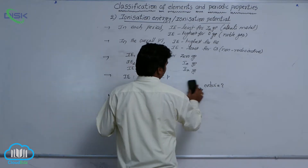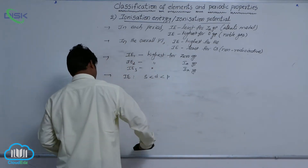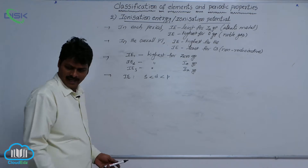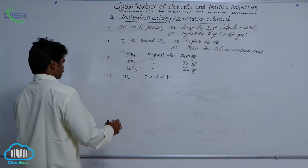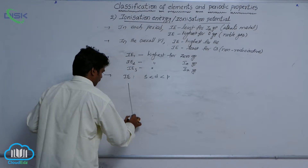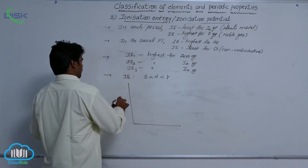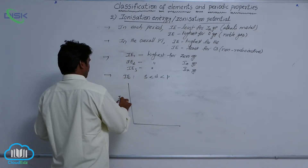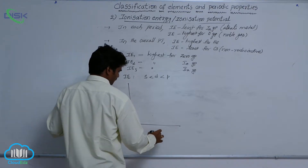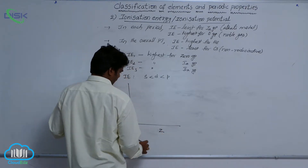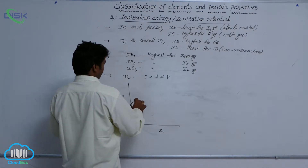There is a graph showing the ionization energies and atomic numbers. The graph is drawn between ionization energy values in electron volts per atom along the y-axis and atomic number along the x-axis.